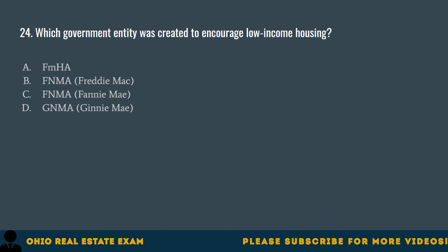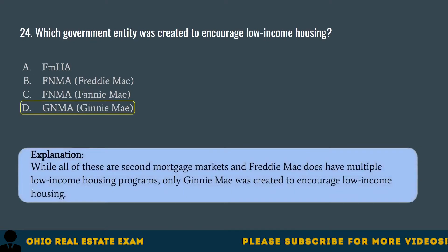Question 24. Which government entity was created to encourage low-income housing? A. FMHA. B. FNMA — Freddie Mac. C. FNMA — Fannie Mae. D. GNMA — Ginnie Mae. The correct answer is D. GNMA, Ginnie Mae. While all of these are secondary mortgage market entities and Freddie Mac does have multiple low-income housing programs, only Ginnie Mae was created specifically to encourage low-income housing.